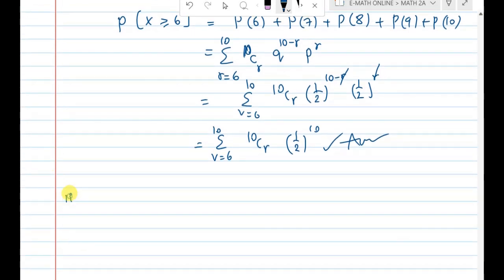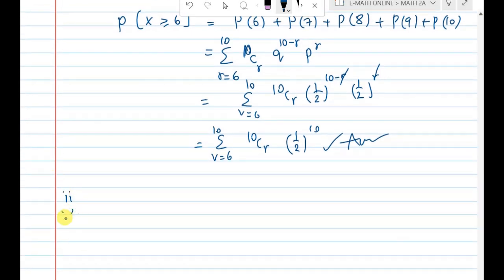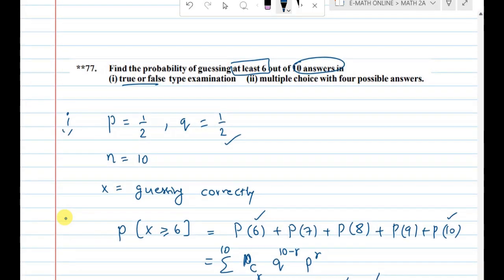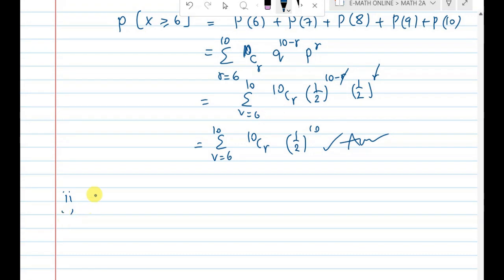Second question is: multiple choice with 4 possible answers. This time we have 4 possible answers. To answer correctly, the probability is 1 by 4, because there are 4 options.